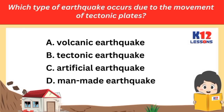Which type of earthquake occurs due to the movement of tectonic plates? A. Volcanic earthquake. B. Tectonic earthquake. C. Artificial earthquake. D. Man-made earthquake.